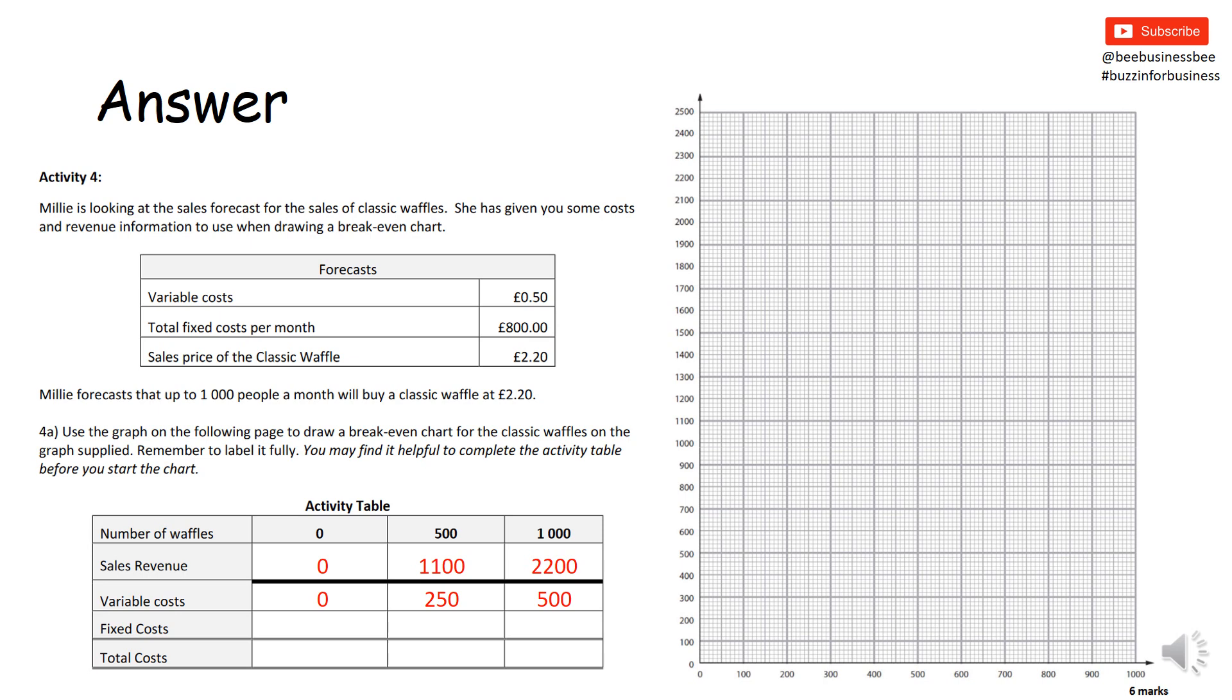And now we've got our fixed costs - money going out because it's a cost. Remember fixed costs don't change, so we know there's £800. If we sell no waffles we still have £800 in costs. If we sell 500 waffles we still have £800 in costs. If we sell a thousand waffles we still have £800 in costs. Now remember you need to learn the formula for total costs. Total costs is fixed costs plus variable costs. So £800 plus zero is £800, £800 plus £250 is £1,050, and £800 plus £500 is £1,300. Now we need to plot it on the graph.